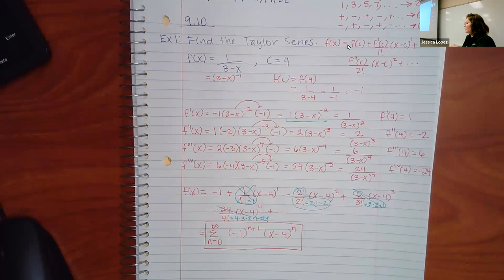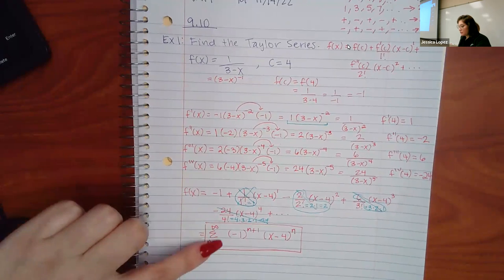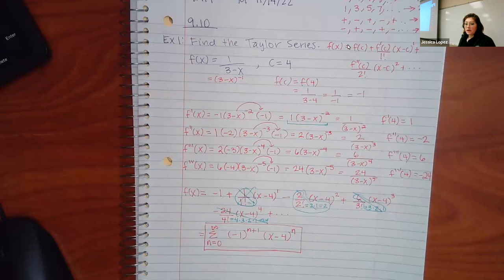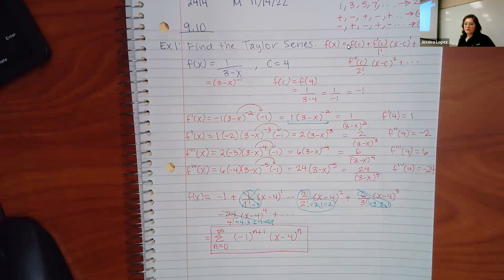In the homework, you stop here — it just wants you to figure out what the series looks like and type it in. On the test, I also make you find the radius of convergence, which is not that difficult — you just apply the ratio test and see what the limit is. Take as many derivatives as you need until you start to see the pattern, whatever's happening.